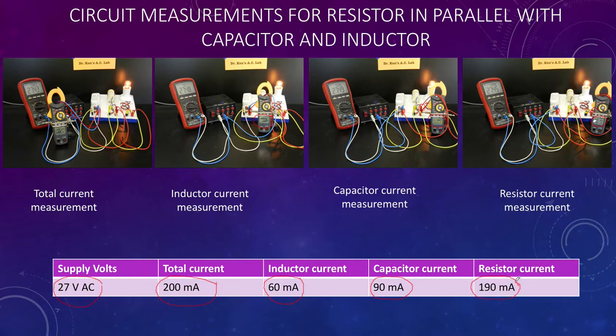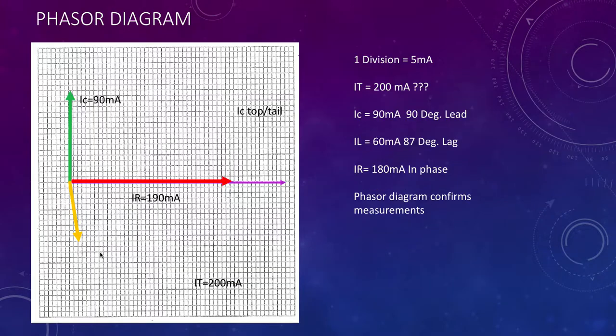So there are our values: 27 volts, total current of 200 milliamps, 60 milliamps for the inductor, 90 for the capacitor, and 190 through the resistor. Does all this make sense? To make sense of it we're going to need a phasor diagram to deal with these complex quantities. Here's our phasor diagram.